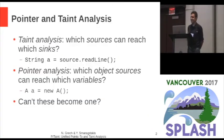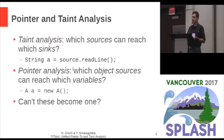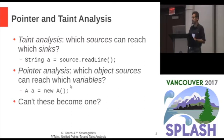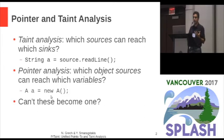Pointer and taint analysis. Taint analysis asks which sources — which value sources — can reach which sinks. Taint sources can be API calls, something like source.readline, tainted values that come from the keyboard. We're trying to resolve that statically. Pointer analysis similarly asks which object sources can reach which variables, where object sources are typically allocation sites, instructions that do a new, that allocate a new object. At a very high level, these two can perhaps become one — a single analysis.